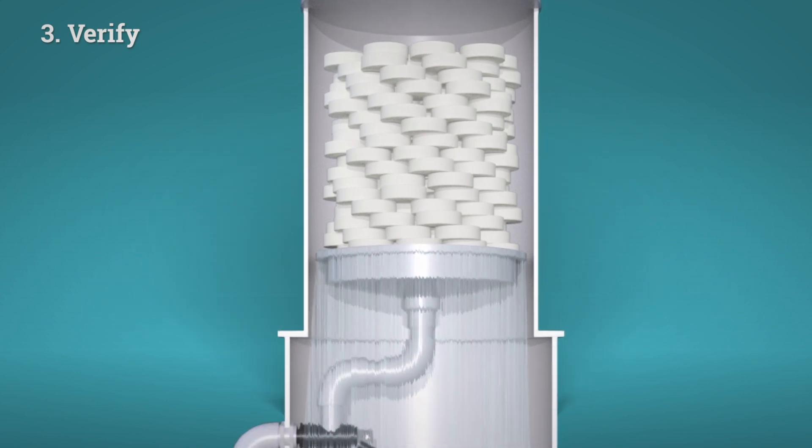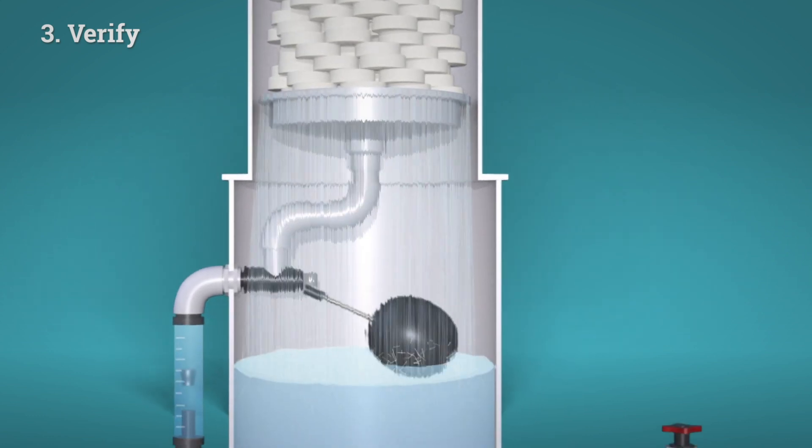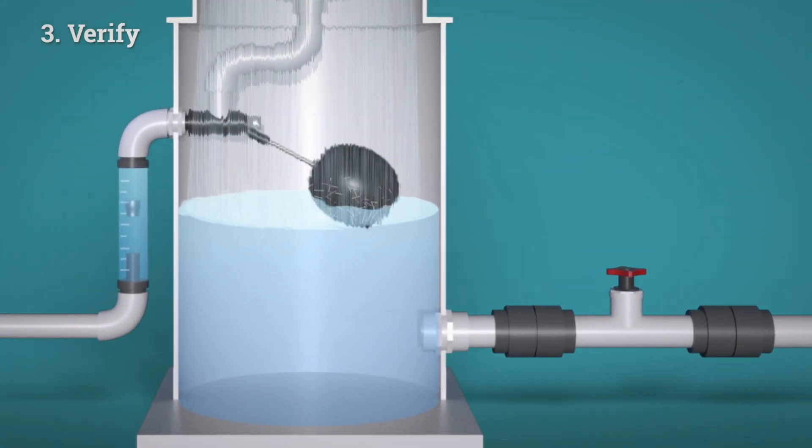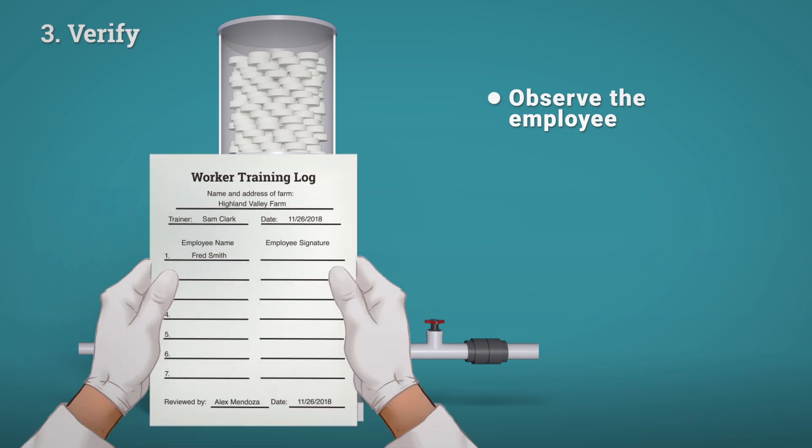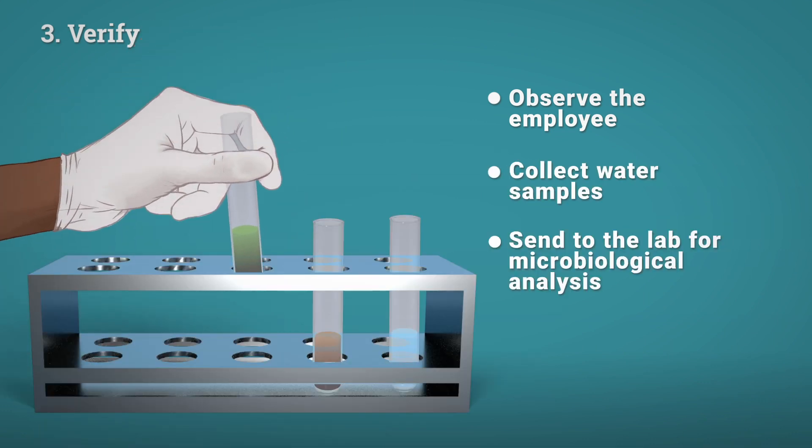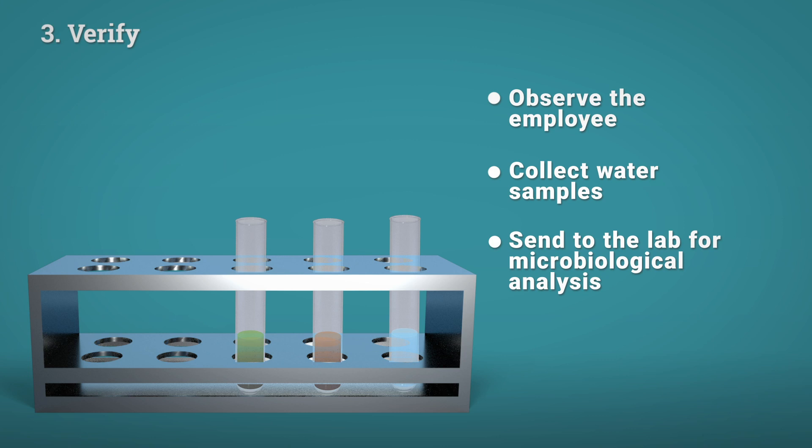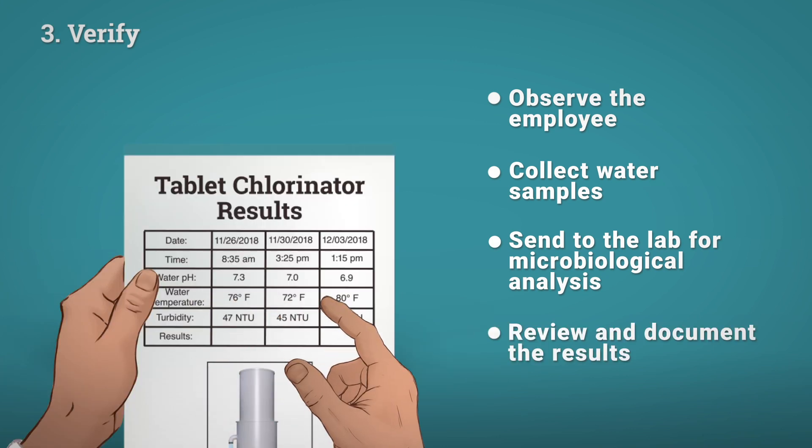Lastly, you will verify that the system works as intended. Examples of verification would be observing the employee monitoring the system, collecting water samples, sending them to the lab for microbiological analysis, and reviewing and documenting the results that the lab passes along.